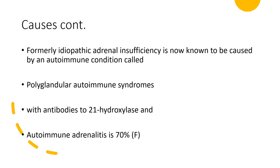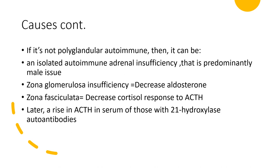Still on causes: if it is not polyglandular autoimmune — and from the nomenclature, poly means many, glandular means many glands affected by an autoimmune condition — then it can be isolated autoimmune adrenal insufficiency, meaning only the adrenal gland is affected by the autoimmune condition, and that will be more common in males. If zona glomerulosa is affected, there will be decreased aldosterone. If zona fasciculata is affected, the cortisol response to ACTH will be low. Later on, there will be a rise in ACTH in serum of those with 21-hydroxylase antibodies.